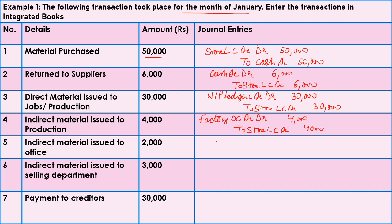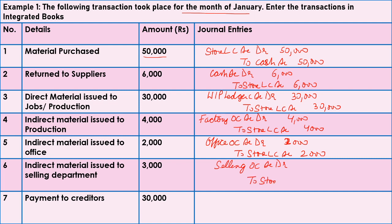Indirect material costing Rs.2,000 transferred to the office: debit Office Overhead Control Account, credit Store Ledger Control Account — Rs.2,000. For indirect material issued to the selling department, the selling department is the receiver. Entry: Selling Overhead Control Account Dr. to Store Ledger Control Account — Rs.3,000.